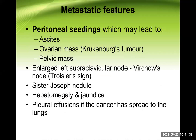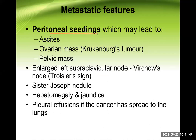Metastatic features include peritoneal seeding or infiltration leading to ascites; Krukenberg tumor causing bilateral enlargement of the ovary with formation of a pelvic mass; Troisier's sign — enlarged left supraclavicular lymph node, known as Virchow's lymph node; and Sister Joseph's nodule present in the umbilicus.